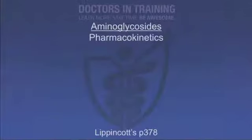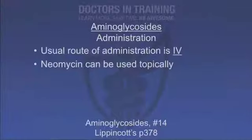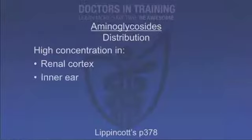Pharmacokinetics: aminoglycosides are bactericidal, time- and concentration-dependent, with a post-antibiotic effect — meaning bacterial death continues even after the antibiotic has left the system. Administration is IV; they are highly polar. Neomycin can be used topically but infrequently. Distribution is variable with high concentrations in the renal cortex and inner ear, which relates to toxicities. They are rapidly excreted in urine, so dose modification is needed with renal failure.